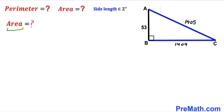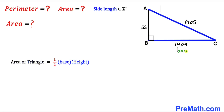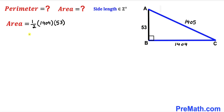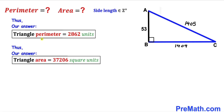Now we calculate the area of triangle ABC using the formula: Area = ½ × base × height. In our triangle, the base is 1404 and the height is 53. So the area = ½ × 1404 × 53 = 37,206 square units. Therefore, the perimeter of triangle ABC is 2,862 units and the area is 37,206 square units.